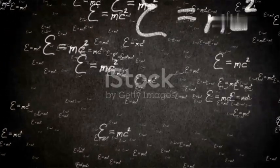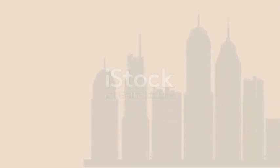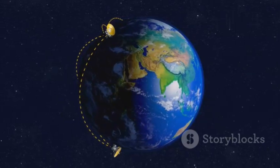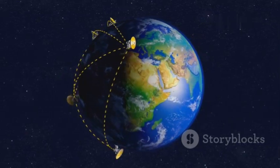Einstein's theories of relativity are not just theoretical curiosities. They have real-world applications that impact our lives every day. One of the most well-known examples is the Global Positioning System, or GPS.